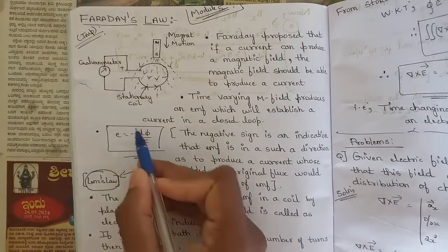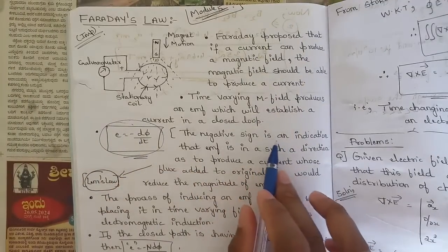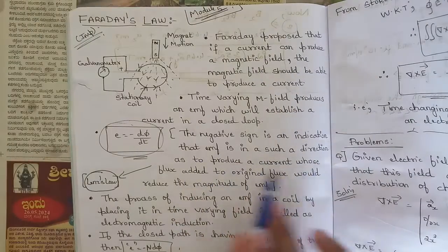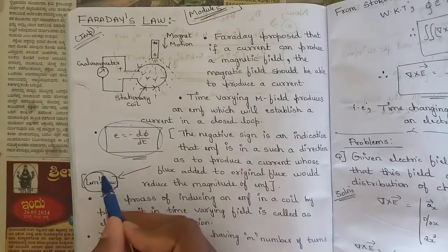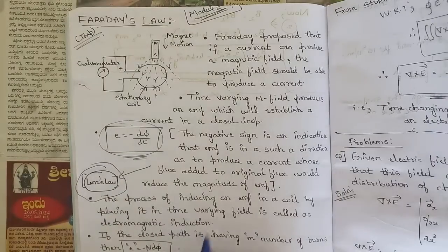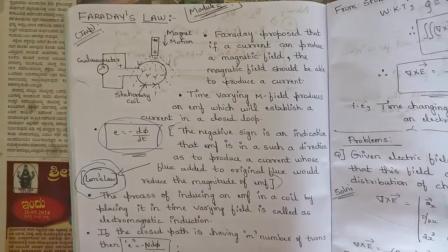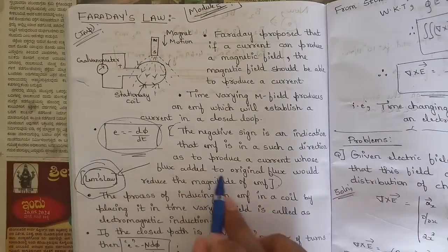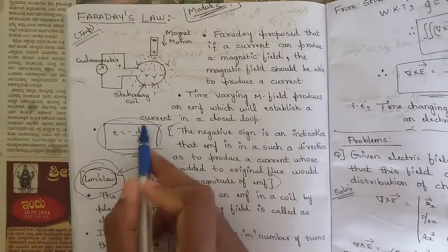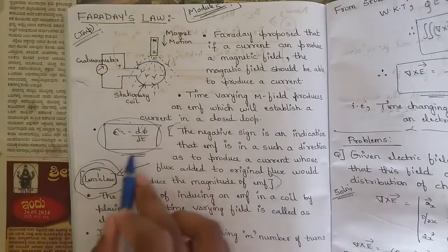He indicated the relation E = -dφ/dt. The negative sign indicates that EMF is in such a direction as to produce a current whose flux, added to the original flux, would reduce the magnitude of EMF. This statement corresponds to Lenz's law. In an exam, if asked to state Lenz's law along with the relationship between electric and magnetic fields, you can directly write this derivation.